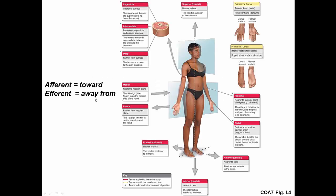Terms of relative position: afferent means toward and efferent means away from. Medial means closer to the median plane — for instance, the fifth digit of the hand is closer to the median plane than the thumb, which is more lateral. Anterior means closer to the front, posterior means closer to the back, also called ventral versus dorsal. Inferior, or caudal, means closer to the feet — for example, the stomach is inferior to the heart, which is superior to the stomach.